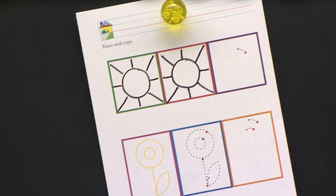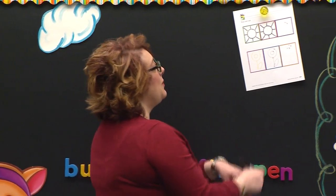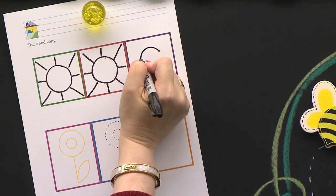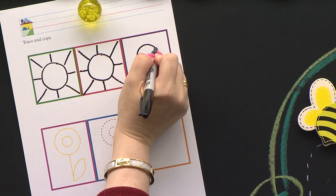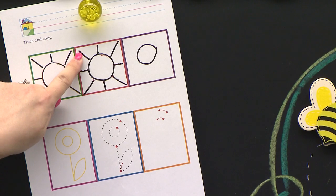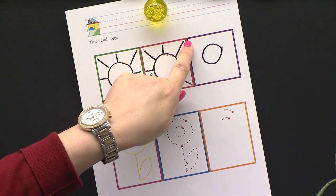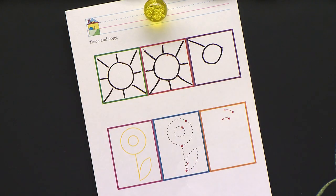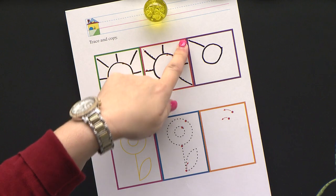Now we have practiced twice — we have made two sunshines. Now we're going to make our very own. In the purple box there's just a red dot, so I'm going to start on the red dot, go towards the arrow, make a circle, and come right back to the red dot. Go ahead and do that now — start on the red dot, go towards the arrow, go around, and back to the red dot. We're going to follow the same pattern. We started in the corner between the purple box and the red box, so start right here in the corner and go towards your circle.